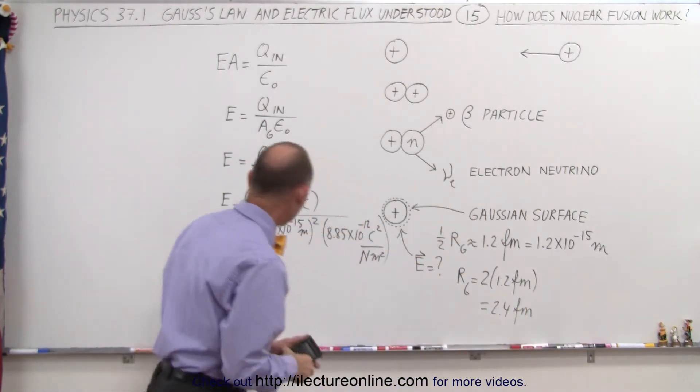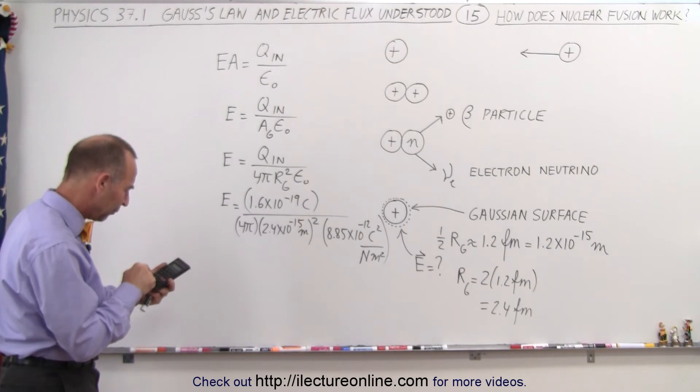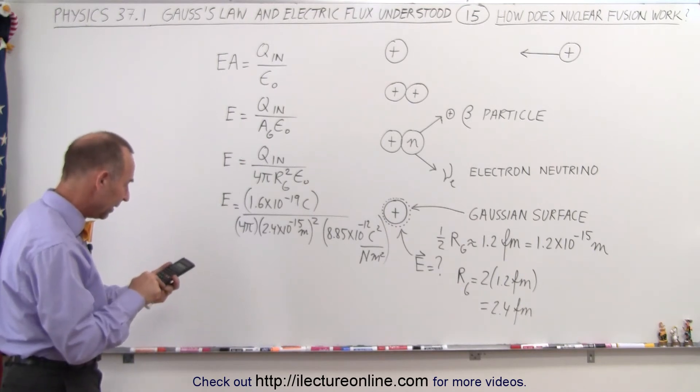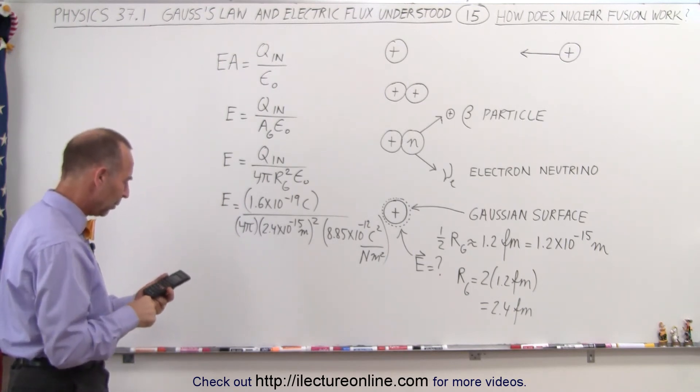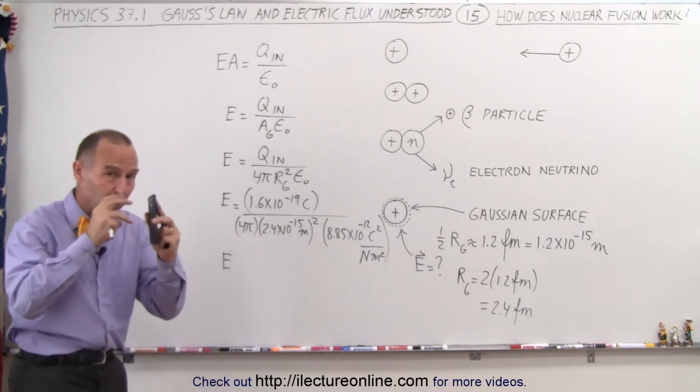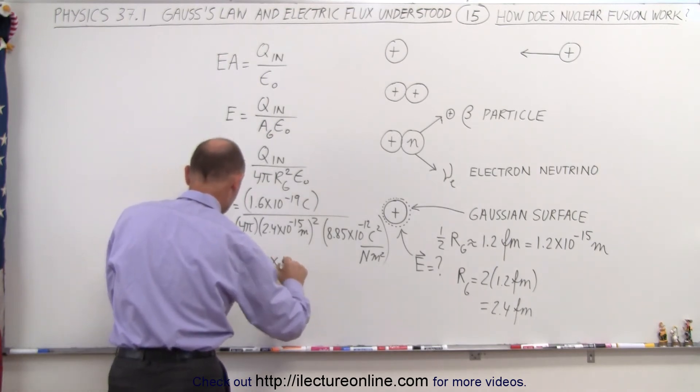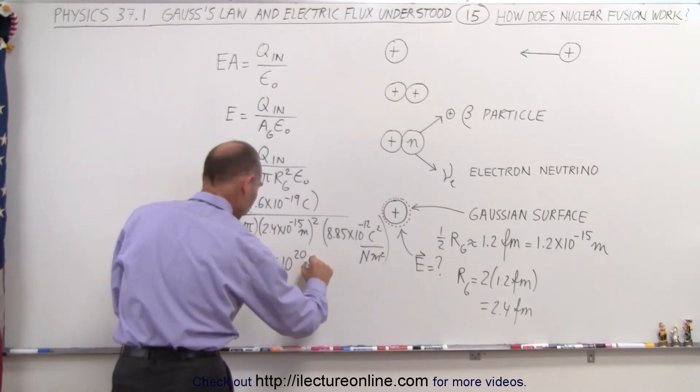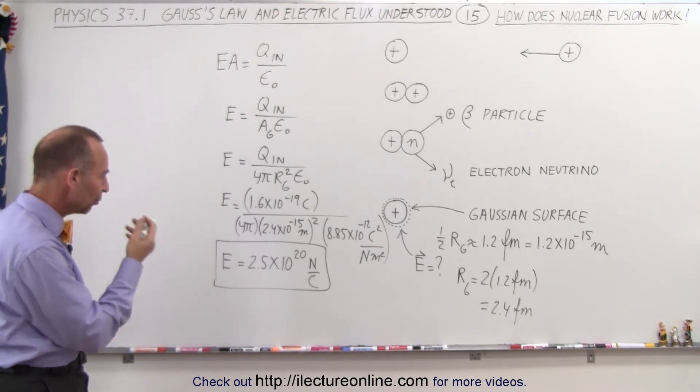So let's get a calculator out and figure out how strong that electric field is. What's the magnitude of a field like that? 1.6 E to the 19 minus divided by 4 divided by pi divided by 2.4 E to the 15 minus squared. Oh, let me do this again because I pushed the wrong button. 1.6 E to the 19 minus equals. Wow. 2.5 times 10 to the 20th. So the electric field at that spot, when two protons are close enough together so they can be joined into a deuteron, the electric field at that point would be 2.5 times 10 to the 20th newtons per coulomb. Wow. I've never calculated it before. That is quite amazing.